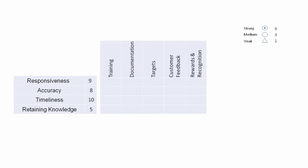Let us see what happens with responsiveness. Responsiveness has a strong relationship with customer feedback, so a score of 9 has been assigned. Reward and recognition has a medium relationship with responsiveness — if we reward our employees they will be more responsive — so a score of 3 is given. Accuracy is driven by training, documentation, customer feedback, and reward and recognition, so scores of 3, 3, 9, and 3 are given respectively.